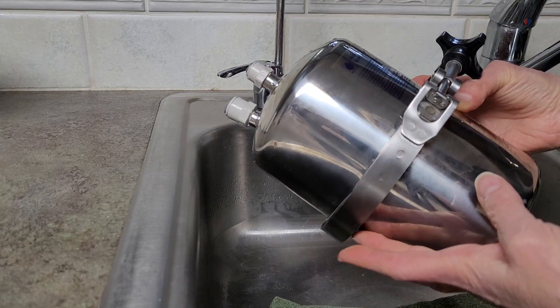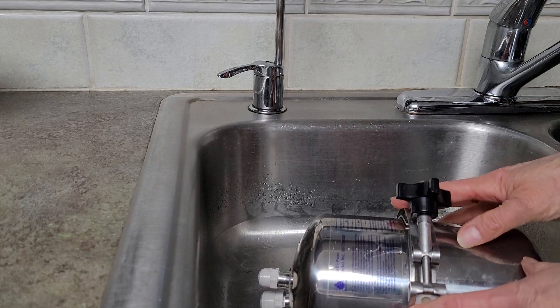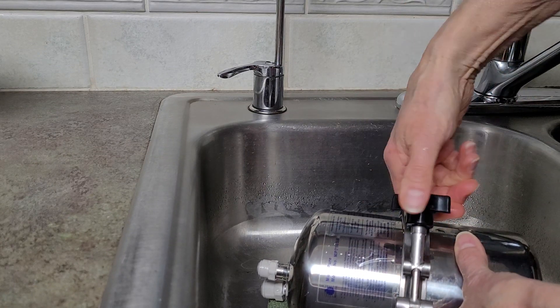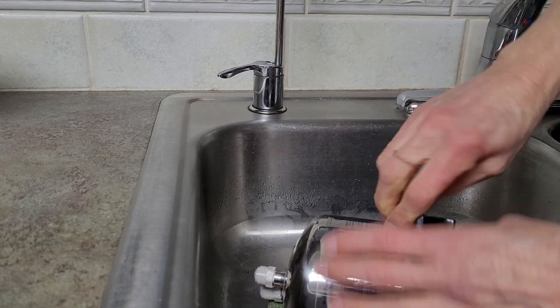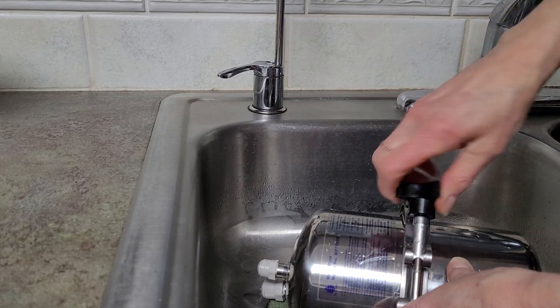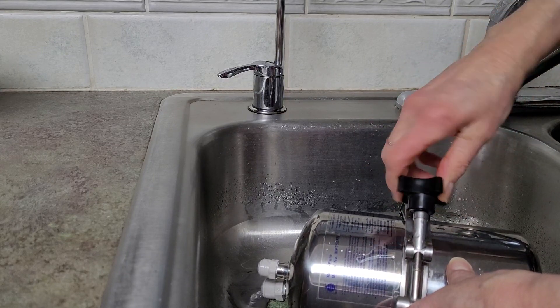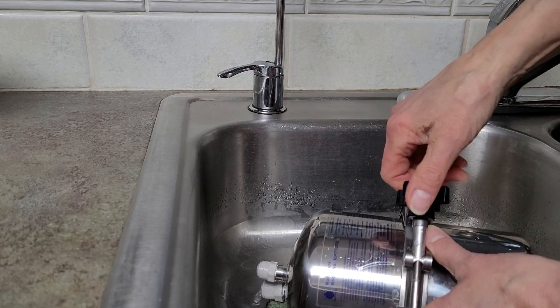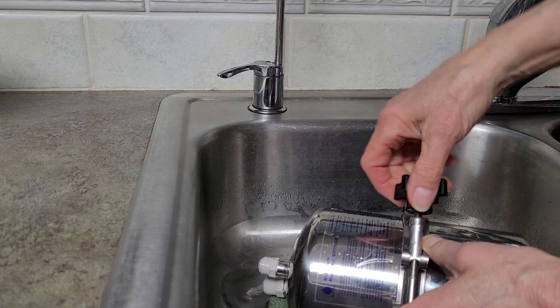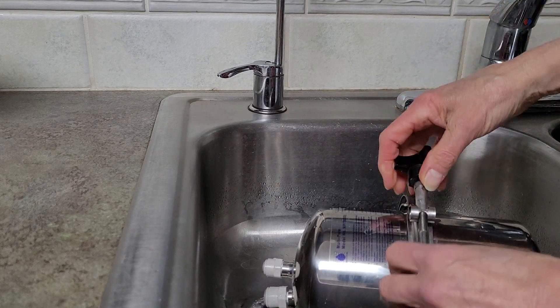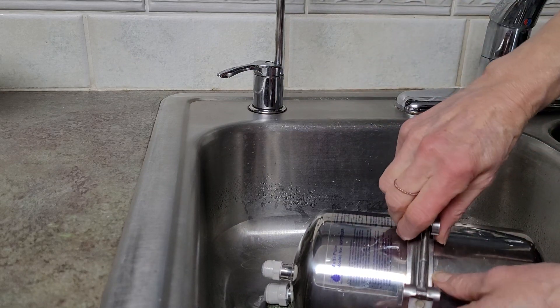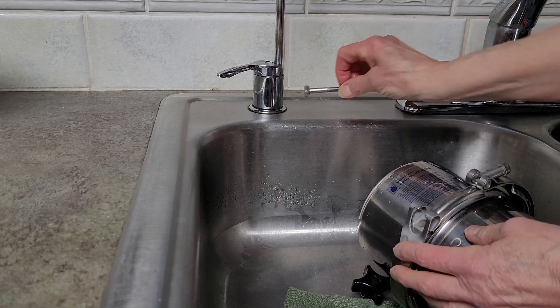Next step is we're going to take this band off which will open up the canister. Simply start unscrewing this big black knob. It's really important to be sure and change your filter at least once per year. Depends on which unit you have as well. If you have the Aqua Mini, you're going to be changing that at least every six months or sooner depending upon your water quality and source.